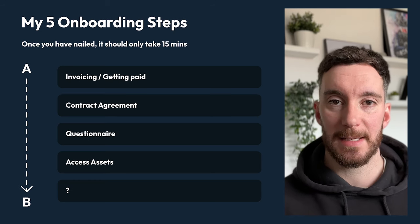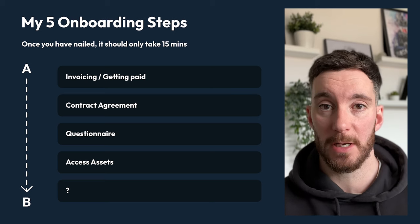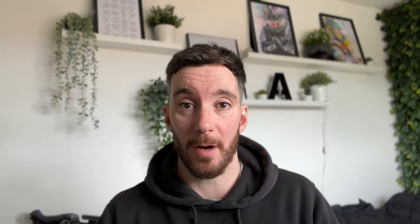Step four is all about accessing the assets that you need. Most of this will be taken care of during the questionnaire where you're asking for their logo or photography, but more often than not they'll send things over via email or not include them in the questionnaire. So we make sure we're collecting that information and any additional items we need — like access to their domain name, existing website, or Google Analytics — anything we need in order to fulfill the project.